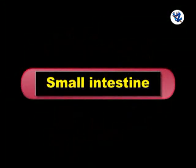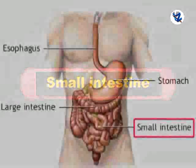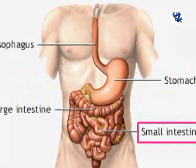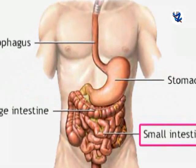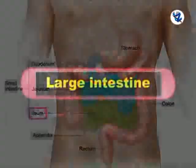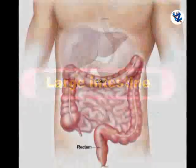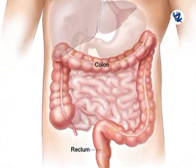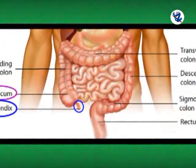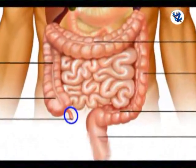Then small intestine — it is about 6 m long and 2.5 cm broad, compactly coiled within the abdominal cavity. It has three parts: duodenum which is U-shaped, then jejunum and ileum. Then large intestine — colon and rectum are the two parts of it. At the junction of colon and rectum there is a cecum, which is a blind pouch. The vermiform appendix, which is vestigial in function, arises from the cecum.